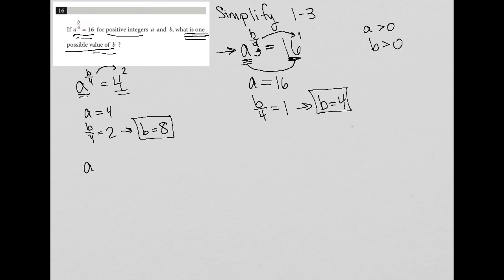And then lastly, I could say, A to B over 4 is equal to 2 to the fourth power, right? 2 to the fourth power is equal to 16. So in this case, just like before, we say A and 2 are the same. So I say A is equal to 2. And then I can say that B over 4 is equal to 4. And therefore, B is equal to 16. So there is a third possibility for the value of B.